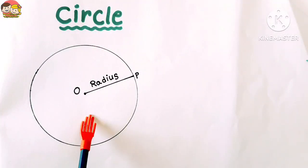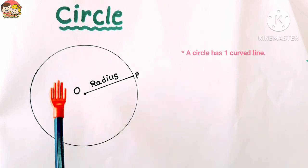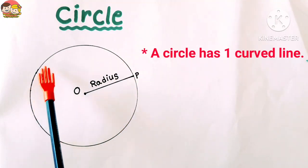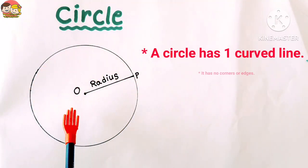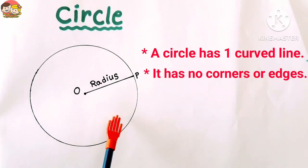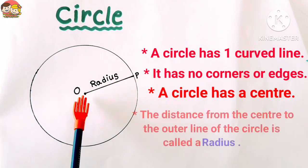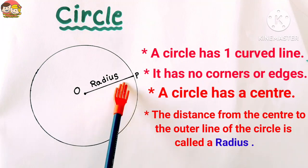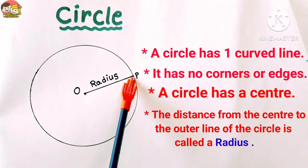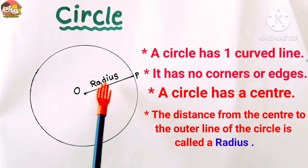Some common 2D shapes are circle, triangle, square, rectangle, etc. Properties of 2D shapes: Look at this figure. This figure represents a circle. This is a circle shape. A circle has one curved line, it has no corners or edges. A circle has a center. Here O is the center of this circle.